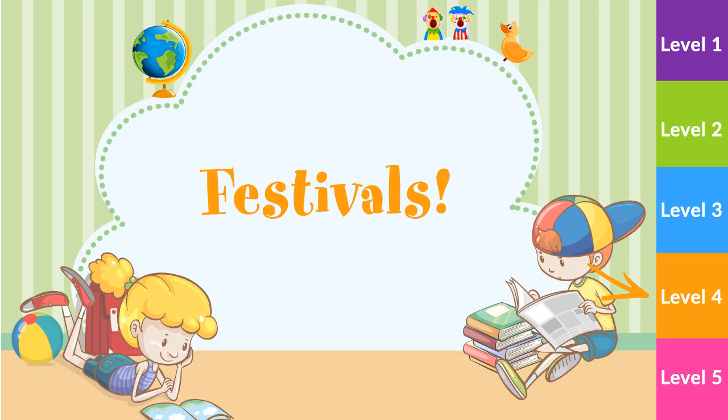7. There are four jack-o-lanterns. What colour are they? 8. Where is the owl? A. On the tree. B. Under the tree. C. Behind the tree.